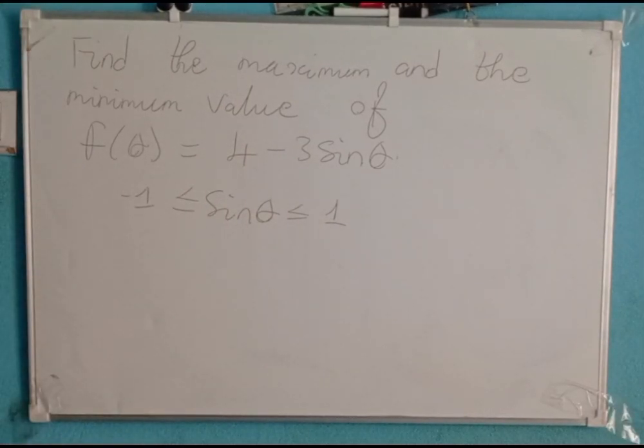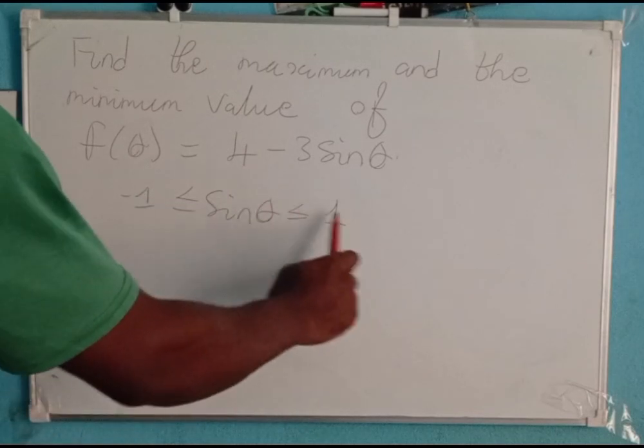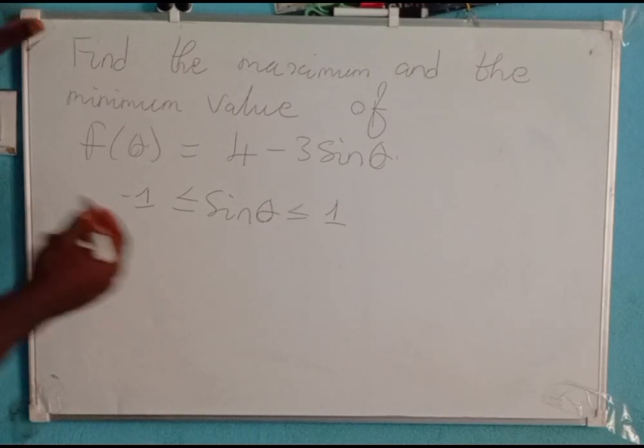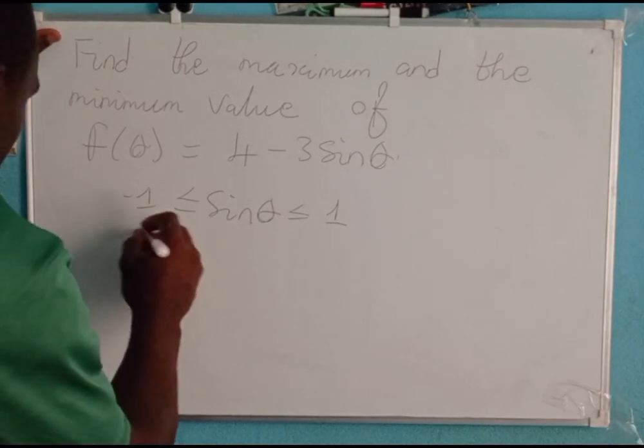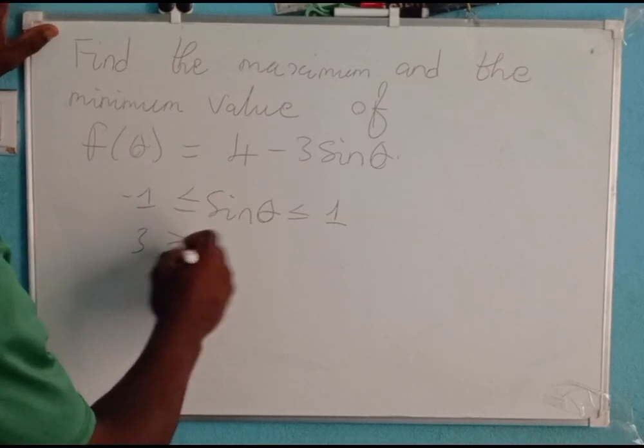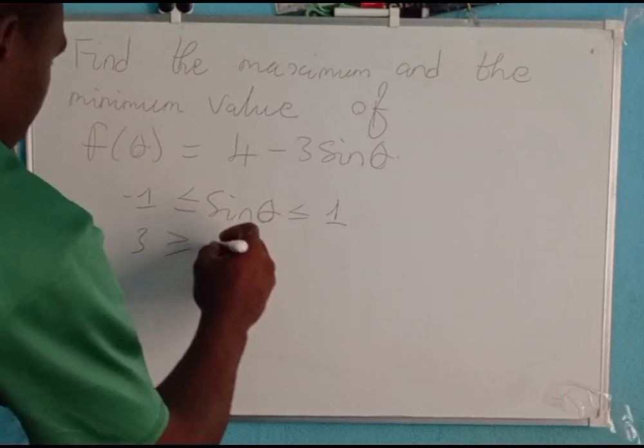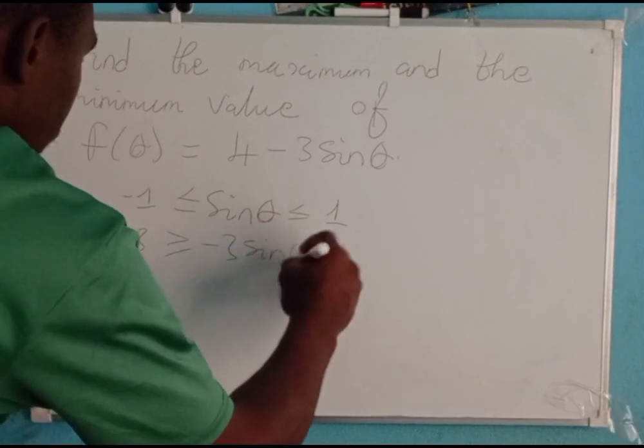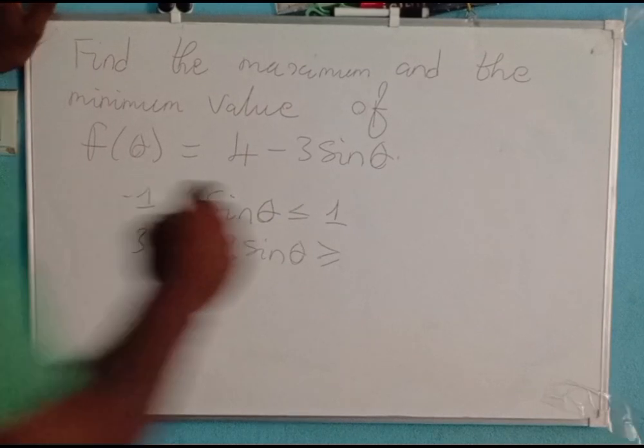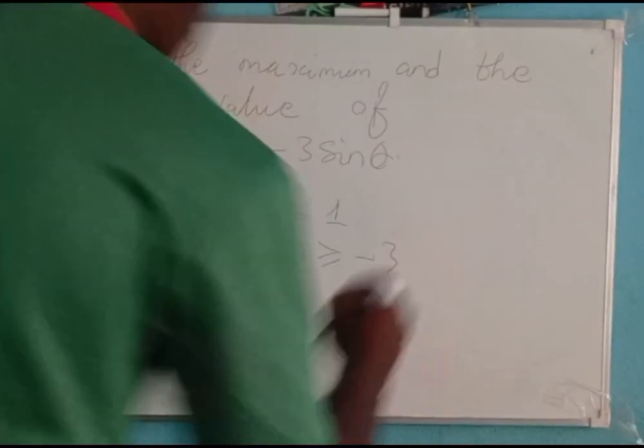Next, if we multiply all through this double inequality by negative 3, the inequality signs will reverse. Negative 3 times negative 1 gives us 3. The sign, instead of less than or equal to, becomes greater than or equal to. Negative 3 sine theta is greater than or equal to negative 3 times 1, which gives us negative 3.